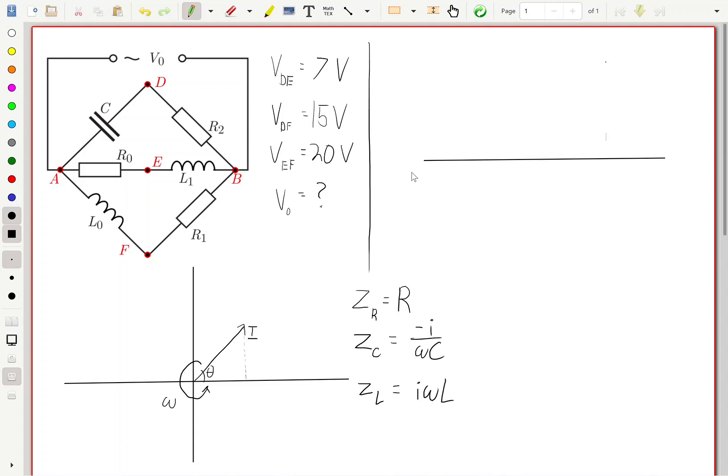But what should be the same is that the potential difference from A to B, no matter what path you take, is going to be the same, and that's given by Kirchhoff's loop rule. So here we have A to B, and we're going to model the potential differences in the complex plane. A to B is going to be the real axis.